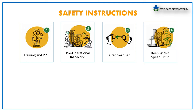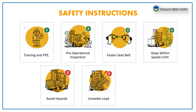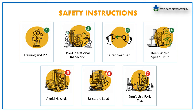Keep within the speed limit — always operate the forklift at a speed appropriate for the environment. Observe work site rules and operate the forklift safely. Avoid hazards — do not drive over objects such as pieces of wood scattered on the ground. Stack the load on the pallets and use prevention measures such as ropes or binders if required.